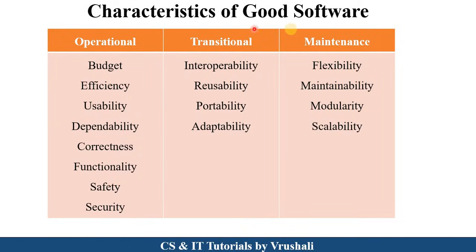The next thing is characteristics of good software. These characteristics are divided into three parts: operational, transitional, and maintenance. Taking the example of WhatsApp — operationally, it is budget-friendly for every user. There is efficiency: each application like chatting, video calling, and status works efficiently. Usability means every user can use the application, whether literate or non-literate.